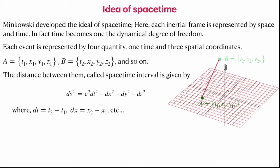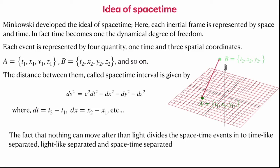Unlike the regular Euclidean distance, which is positive definite, the Minkowskian interval can be positive, negative, or zero. This geometrically incorporates the speed of light: setting ds² = 0 gives dx/dt equal to c, the speed of light. The zero value represents the propagation of light, which is the key difference between the Euclidean and Minkowskian concepts of distance.